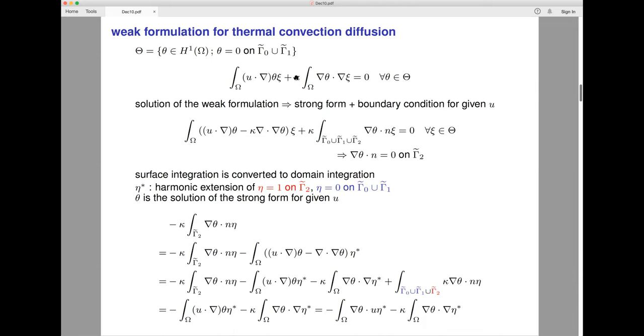On the outlet I only put some Neumann boundary condition. The surface integration can be expressed by domain integration using eta asterisk. This function is a kind of harmonic extension which takes value one on the target surface. Instead of computing just the surface, I can compute this value through standard domain integration.